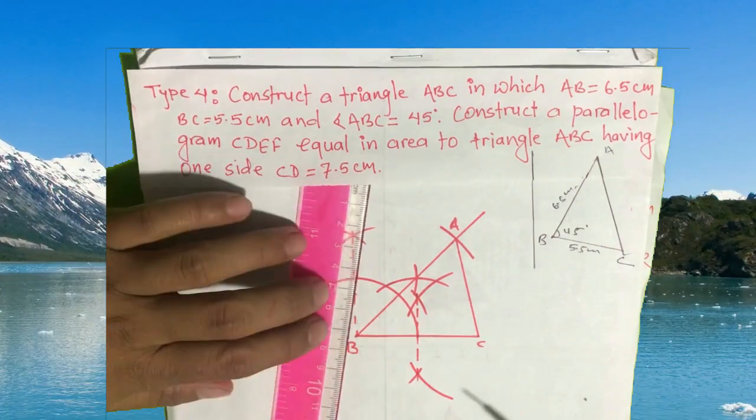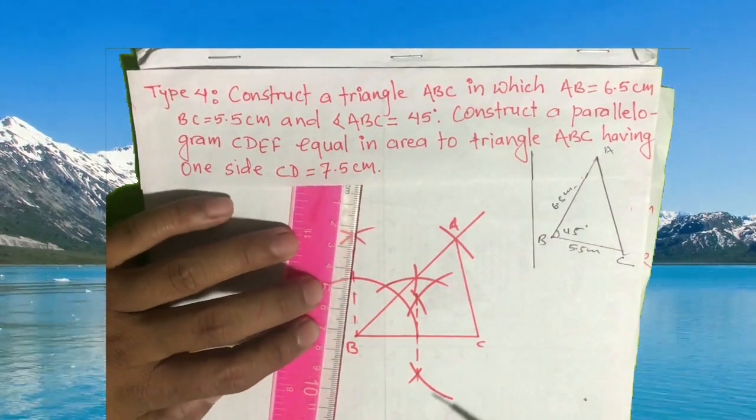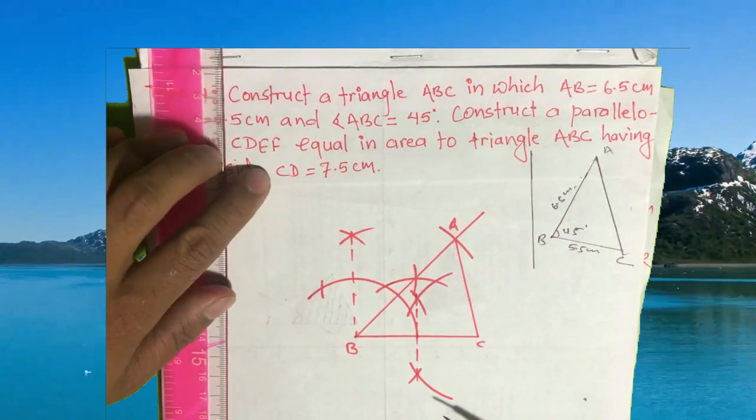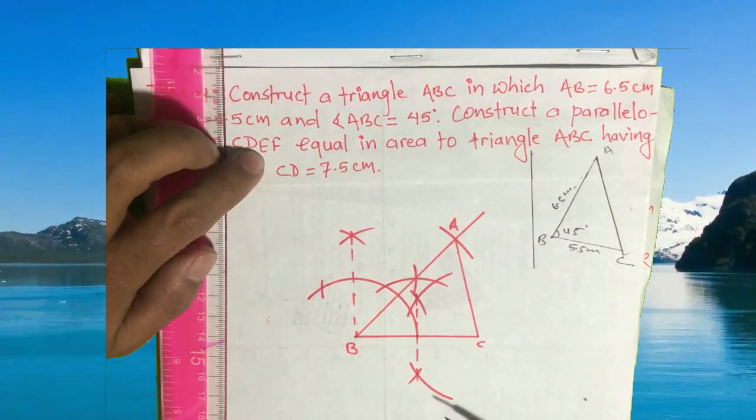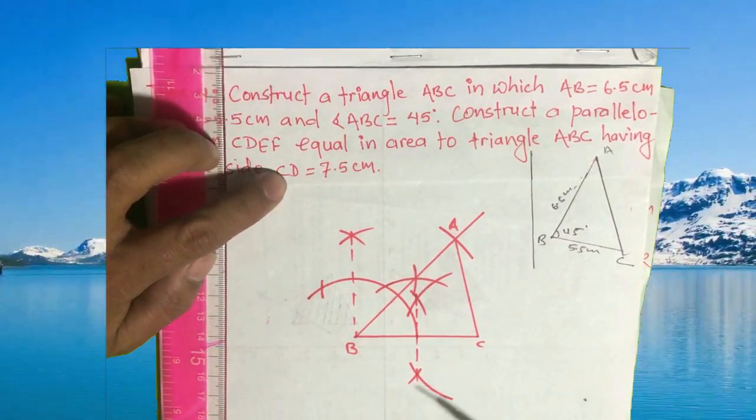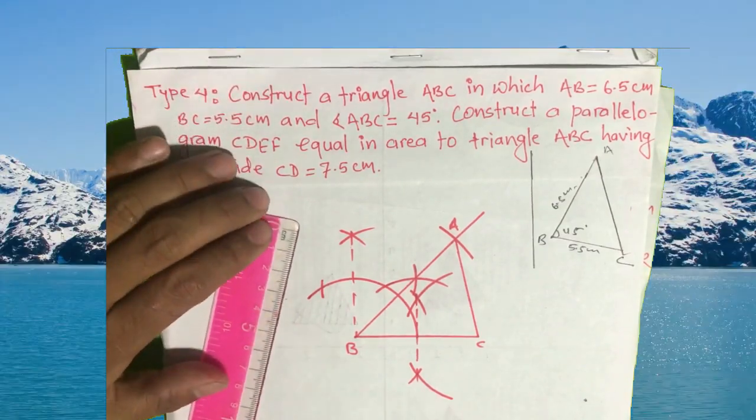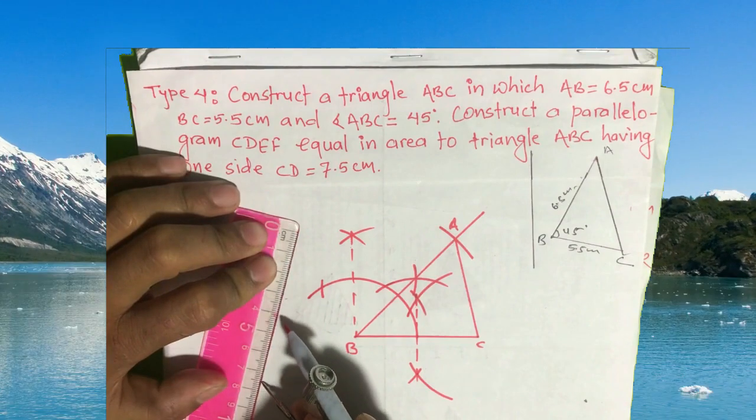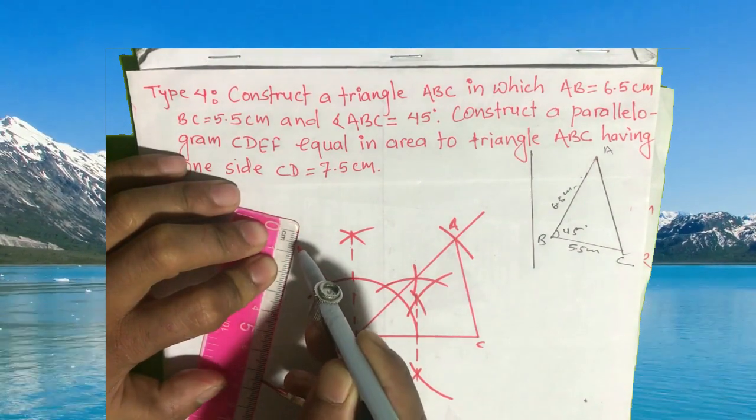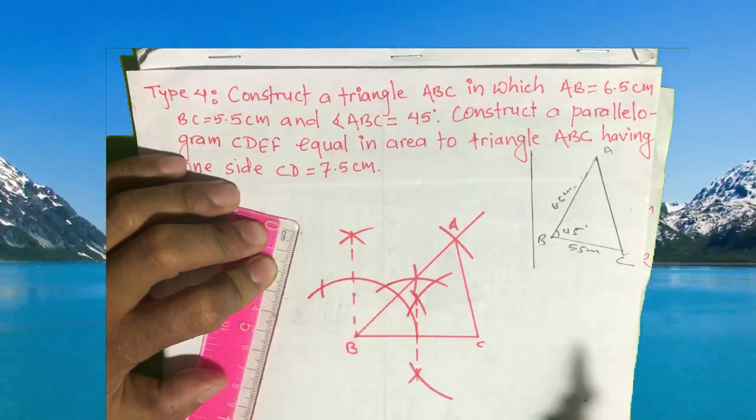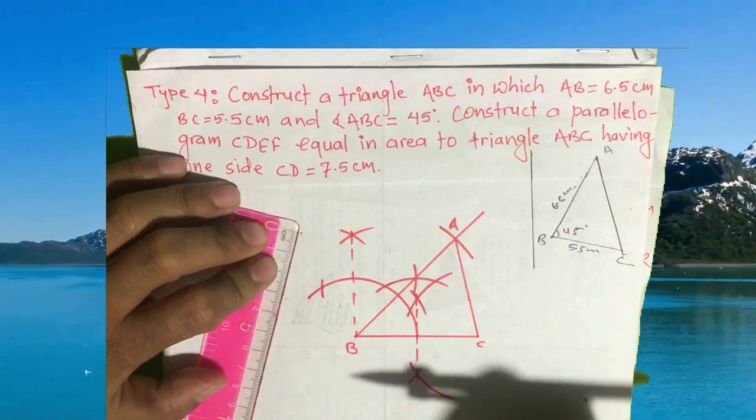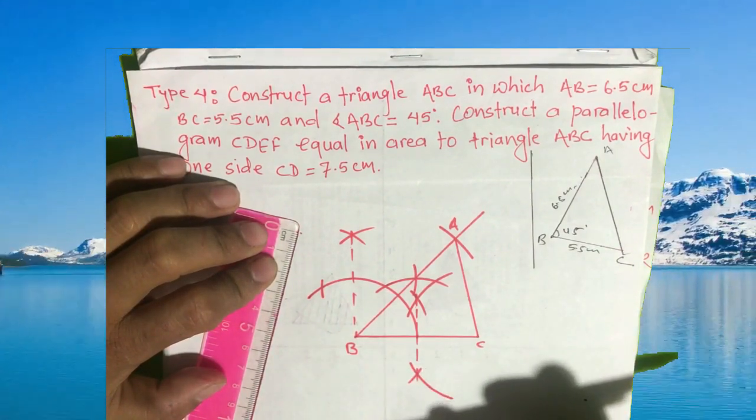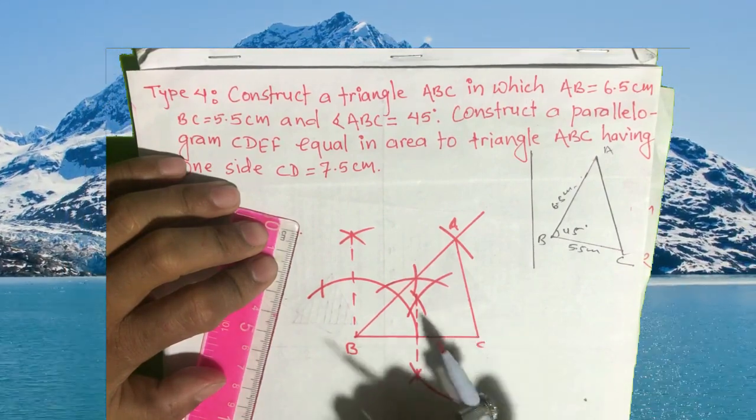Here we are given side CD. CD is 7.5 centimeters long. Make an arc of 7.5 centimeters.